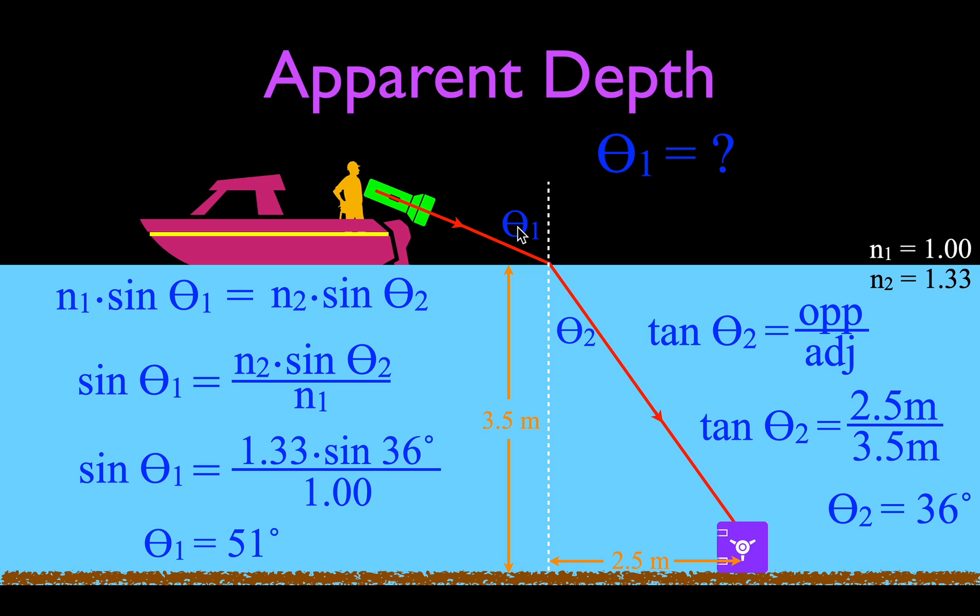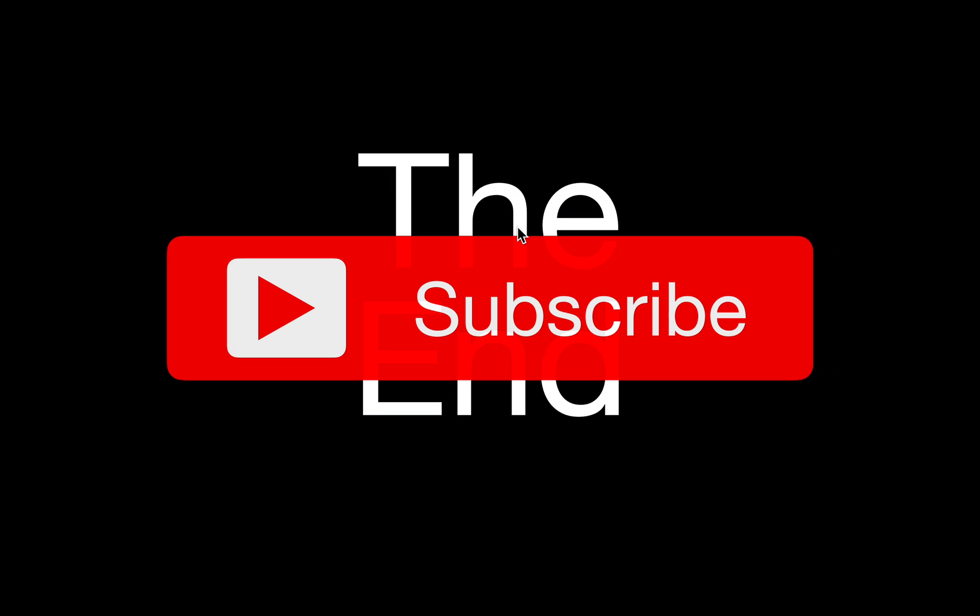So in that video we went over an explanation of apparent depth and why it occurs, a qualitative example with a fish from a boat, and a quantitative numerical example with the safe. I hope you found that helpful. If so, please subscribe to our channel, click the notifications bell, leave a positive comment, give us a thumbs up, and share this video. Thank you so much for watching — we'll see you in the next video.